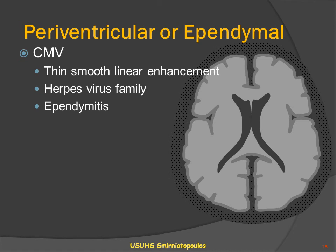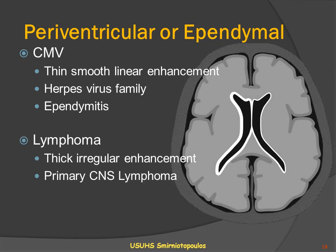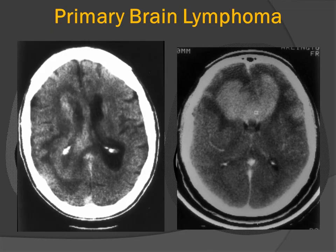Other periventricular lesions include cytomegalovirus (CMV), which typically gives you a very thin line of periventricular enhancement by producing an inflammation of the ependyma itself — ependimitis. In contrast, CNS lymphoma will give us a thick periventricular area of abnormality and enhancement, and oftentimes a very irregular rind around the ventricles. So these two processes, CMV ependimitis and lymphoma, are usually distinguishable on imaging characteristics.